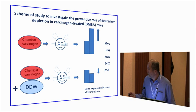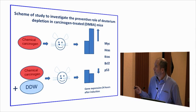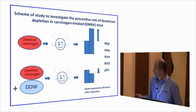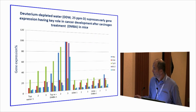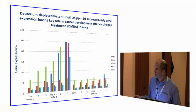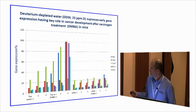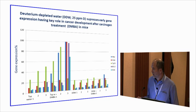We made another experiment. When mice are treated with a carcinogen agent, it triggers expression of genes having key roles in tumor development. We treated mice with dimethylbenzanthracene — one group consuming normal water, the other DDW — and checked gene expression. In mice consuming normal water plus the carcinogen agent, all these gene expressions increased rapidly. When mice were treated with DDW plus the carcinogen agent, we could suppress that expression. This was in collaboration with Zoltán Gyöngyösi at the University of Pécs.